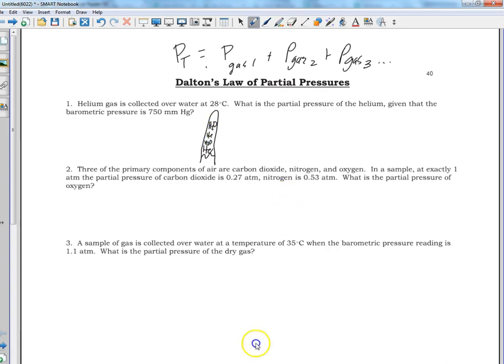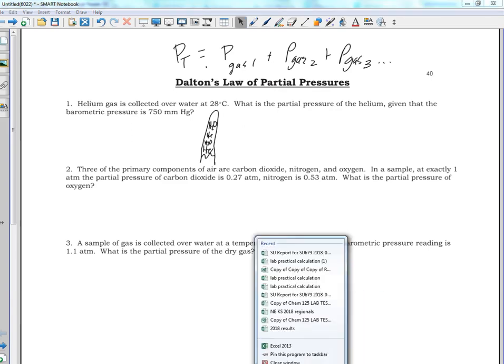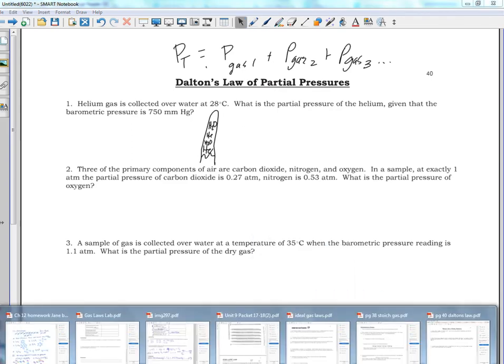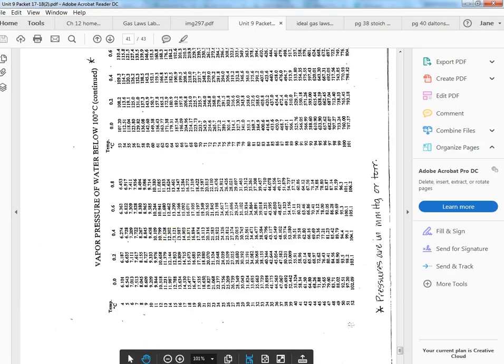In our set of instructions, or in our green packet, we have this information, the vapor pressure of water, and the very first column is all we're going to look at.